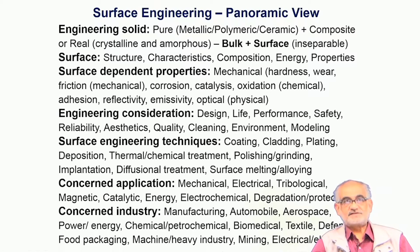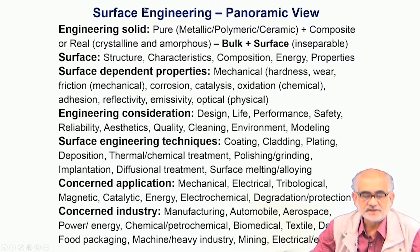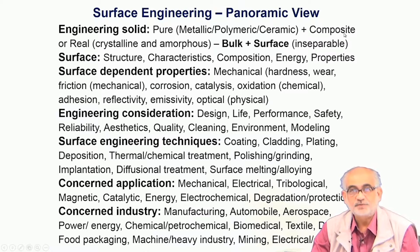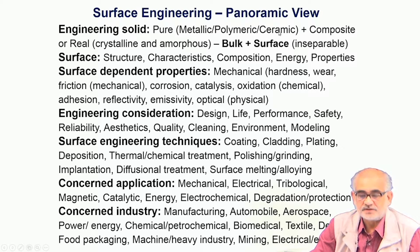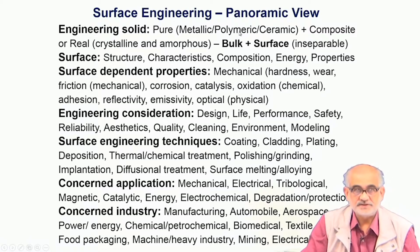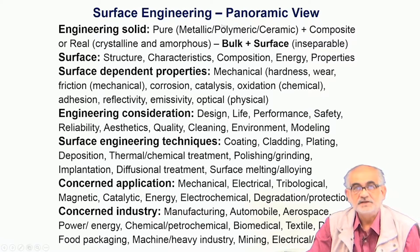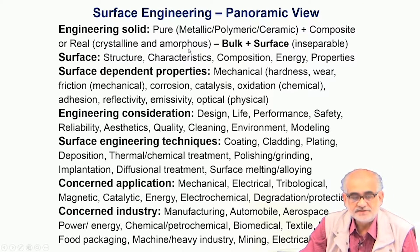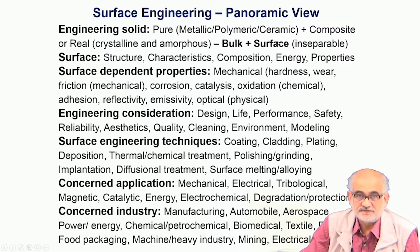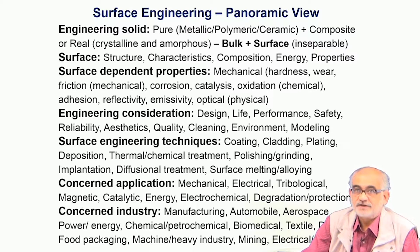We have already discussed that engineering solids can be divided into three pure classes: metallic, polymeric, and ceramic, and combinations of any of these — which is more often than not found in reality. They could be either crystalline or non-crystalline, but whenever we talk of a solid it will have a definite volume and a boundary, and at the boundary we invoke the concept of surface.